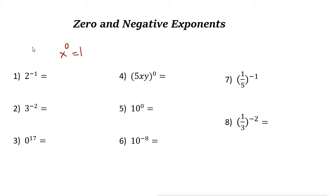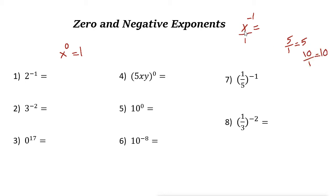Another rule is for negative powers. When x is to the power of negative 1, it simply means that the base is on the wrong side of the fraction. You can write any number over 1 — for example, 5 is 5 over 1, and 10 over 1 is just 10. So when you see x to the power of negative 1 over 1, it means x should not be in the numerator; it should be in the denominator. You need to move it to the denominator and make the power positive by flipping the fraction.